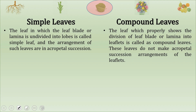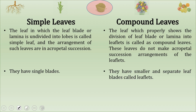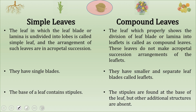A compound leaf shows division of the leaf blade or lamina into leaflets. Compound leaves do not show acropetal succession; instead, leaflets are arranged differently. Simple leaves have a single blade, while compound leaves have smaller and separate leaf blades called leaflets. The base of a simple leaf contains stipules, while in compound leaves additional structures are absent.